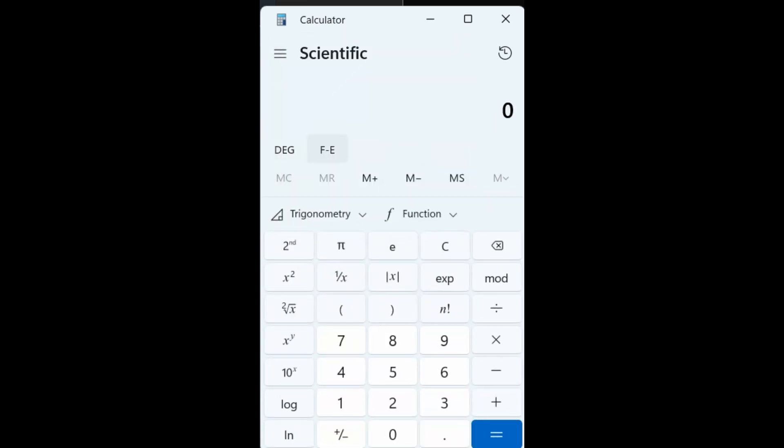If you switch it over to scientific mode, it puts it in what's called expression mode, and allows you to enter in the entire problem as it's written. So it's 8 minus 8 times 8 plus 8 equals. And you'll see the answer is minus 48.